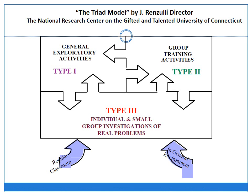Let's take a closer look at what these three different types of enrichment activities are. Type 1 enrichment are general exploratory activities designed to expose students to a wide variety of disciplines, topics, occupations, hobbies, persons, places, and events that would not ordinarily be covered in the regular curriculum. Type 2 enrichment are group training activities to promote the development of problem thinking — that is creative thinking, problem solving, and critical thinking and feeling processes. Type 3 enrichment are individual and small group investigations of real problems, usually more appropriate for students with higher levels of ability, interest, and task commitment for advanced content acquisition and process training — that is talent pool students.